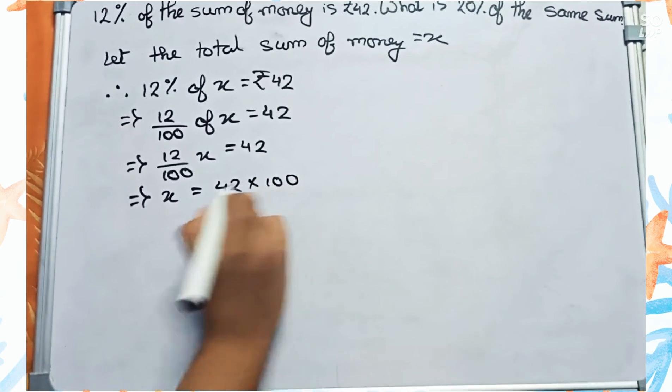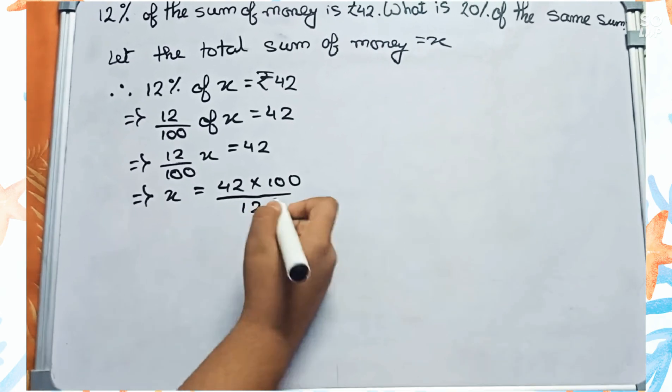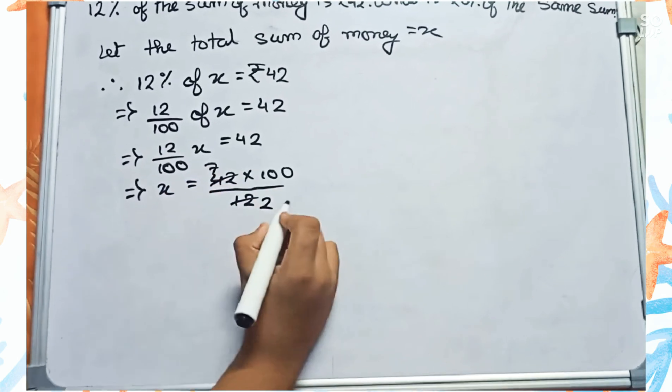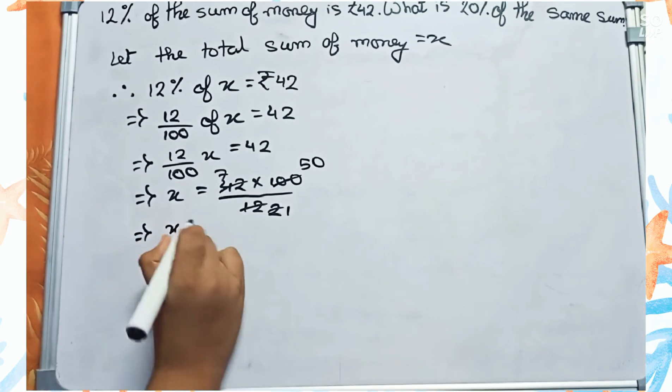So you will first cut by 6 - it becomes 7 - and 100 becomes 50. So X equals to 7 into 50.